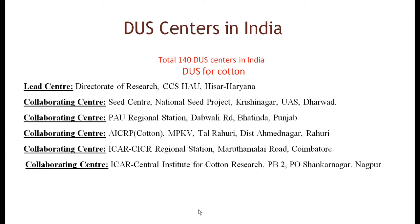There are a total of 150 DUS testing centers in India. For cotton, the lead center is the Director of Research. Collaborating centers include: CIRC center and the National CIRC Project at Krishnanagar and Dharwad; Punjab Agricultural University regional station at Dabwali Road, Bathinda, Punjab; AICRP for cotton at MPKV Rahuri, district Ahmednagar; regional station at Muruthimalai Road, Coimbatore; and the Central Institute for Cotton Research (CICR), Shankar Nagar, Nagpur.